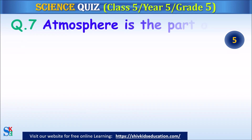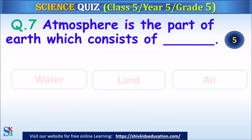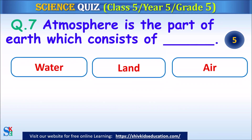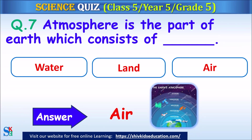Question 7: Atmosphere is the part of earth which consists of water, land or air? The answer is air.